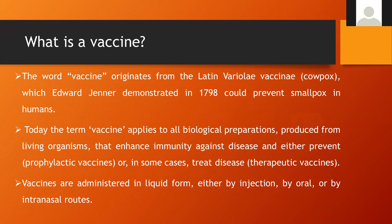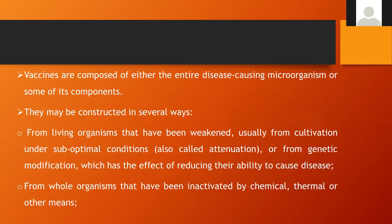Vaccines can be administered in a liquid form either by injection, orally, intranasally, or by other routes. These vaccines are composed of either the entire disease-causing microorganism or in some cases from some of its components. One way to construct a vaccine is from a living organism that needs to be weakened through cultivation processes, or we may do a genetic modification to reduce the ability of that pathogen to cause disease.